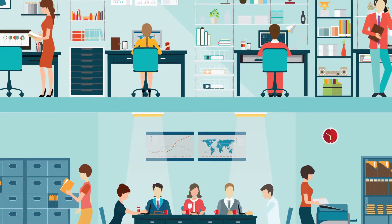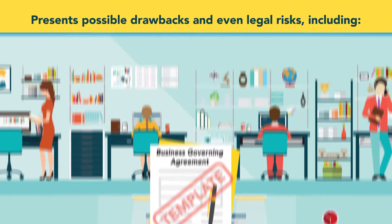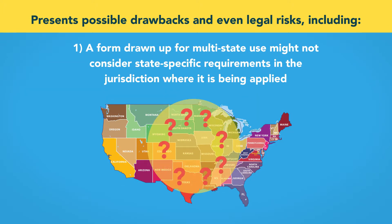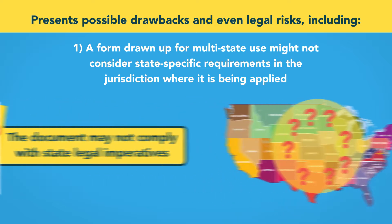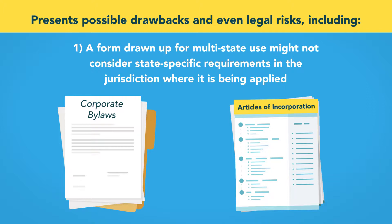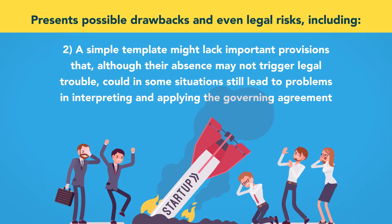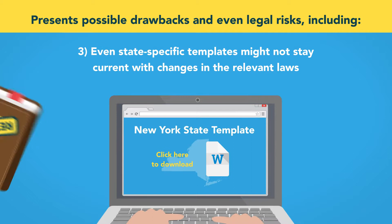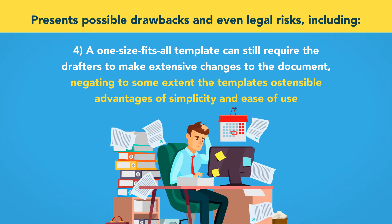For larger businesses with more sophisticated needs, however, a simple template-based governing agreement presents possible drawbacks and even legal risks, including: one, a form drawn up for multi-state use might not consider state-specific requirements in the jurisdiction where it's being applied. Worse, the document may not comply with state legal imperatives, such as in the case of bylaws that attempt to address matters that should be in the Articles of Incorporation. Two, a simple template might lack important provisions that, although their absence might not trigger legal trouble, could in some situations still lead to problems in interpreting and applying the governing agreement. Three, even a state-specific template might not stay current with the changes in the relevant laws. And four, a one-size-fits-all template can still require the drafters to make extensive changes to the document, negating, to some extent, the template's ostensible advantages of simplicity and ease of use.